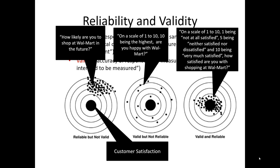Finally, a measurement that might be both valid and reliable would be something like: On a scale of 1 to 10, 1 being not at all satisfied, 5 being neither satisfied nor dissatisfied, and 10 being very much satisfied, how satisfied are you with your shopping at Walmart? We are precisely asking them how satisfied they are, so we would imagine this measure is aligned with the idea of customer satisfaction. We've clearly labeled the far anchor points 1 and 10 as well as the neutral standpoint at 5, so we would suspect that this is both valid and reliable.